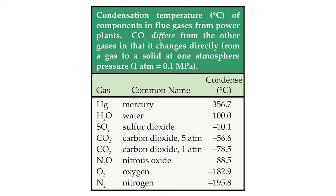Cryogenic separation of carbon dioxide from a gas stream is a physical method in commercial use. It is based on differences in the temperatures at which gas is condensed to a liquid, or in the case of carbon dioxide, at normal atmospheric pressures, freeze directly to a solid.